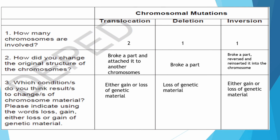Question number one: How many chromosomes are involved? In translocation, two. Deletion, one. Inversion, one. Question number two: How did the mutation change the original structure of the chromosomes? For translocation, a piece broke apart and attached to another chromosome. Deletion, a piece broke apart. Inversion, a piece broke apart, was reversed, and inserted back into the chromosome. Question number three: Which conditions result in a change of chromosomal material? Translocation — either gain or loss of genetic material. Deletion — loss of genetic material. Inversion — either gain or loss of genetic material.